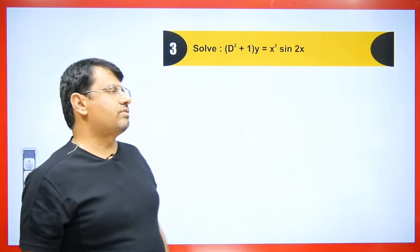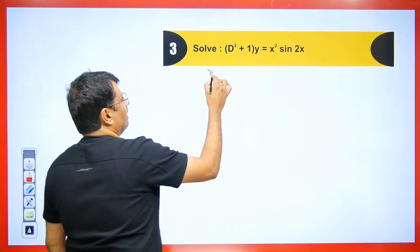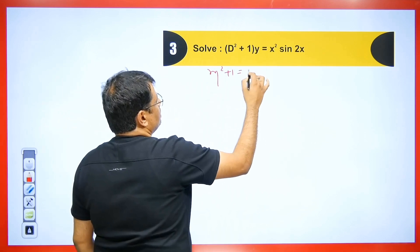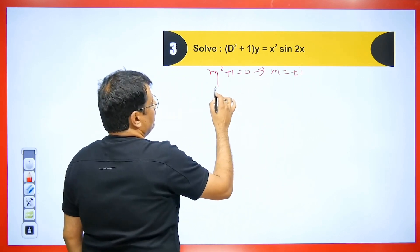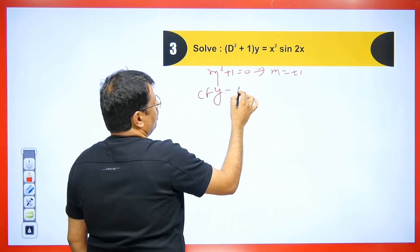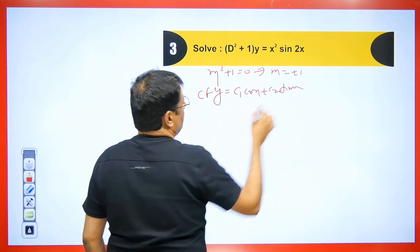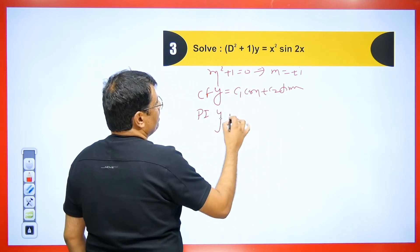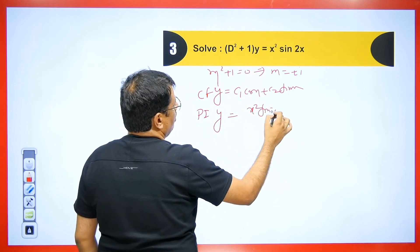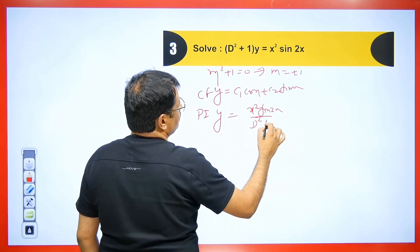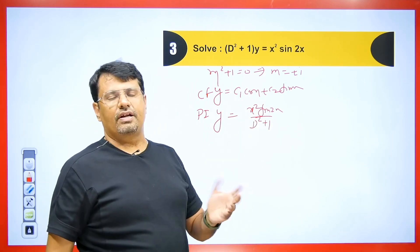Let's say we are given (D²+1)y = x²·sin(2x). First we find the CF: m²+1 = 0, so m = ±i. The CF is y = c₁·cos(x) + c₂·sin(x). For the particular integral, the term goes to the denominator: PI = x²·sin(2x) / (D²+1). Since sin is given, we need to take the imaginary part.